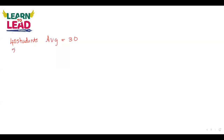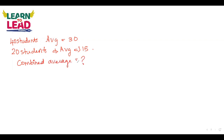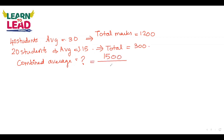A class of 40 students has an average of 30. Another group of 20 students has an average of 15. They are asking: what is the combined average? For 40 students with average 30, the total marks are 1200. For 20 students with average 15, the total marks are 300. Combined average = 1500 divided by 60 = 25.